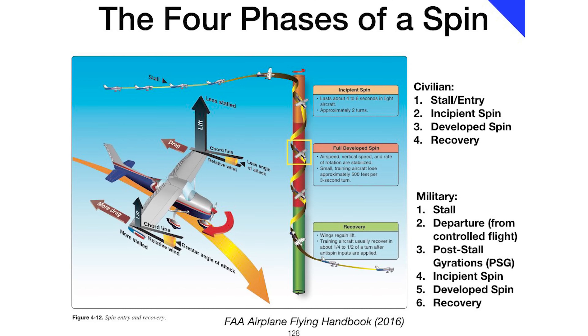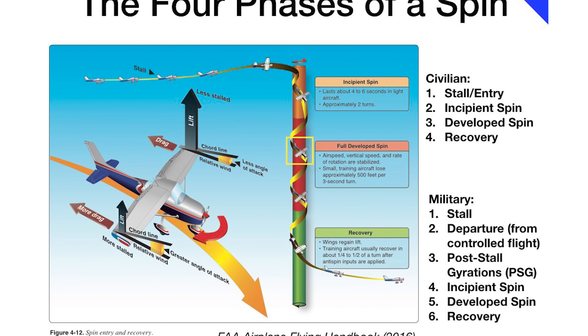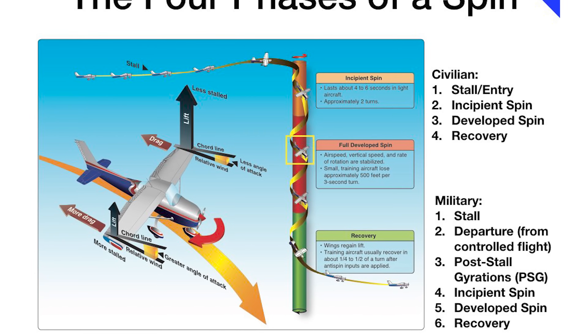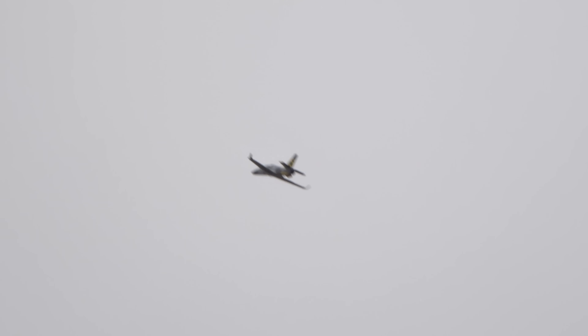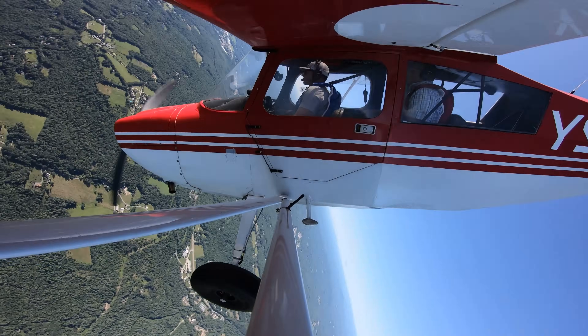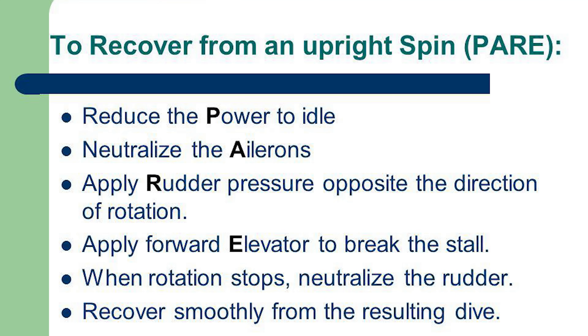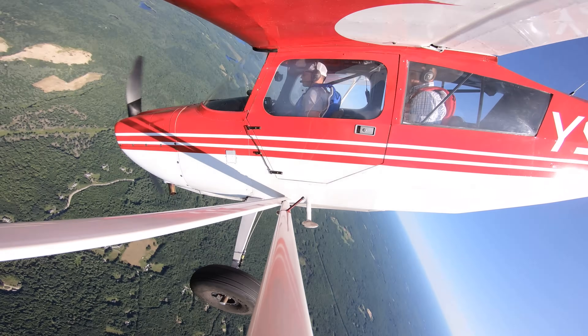Some asymmetric stalls can be defined as incipient spins — when your plane stalls, drops a wing, and the toilet-bowl rotation starts until the spin becomes fully developed. If your incipient spin becomes a fully developed spin despite your best efforts, recovery is very similar. In the full-scale world, the acronym PAIR is taught: Power to idle, Ailerons neutral, Rudder opposite direction of the spin, and Elevator forward.